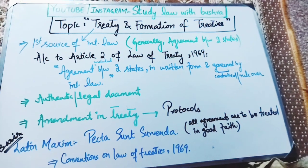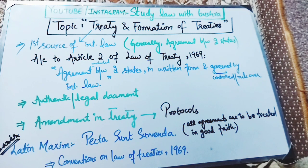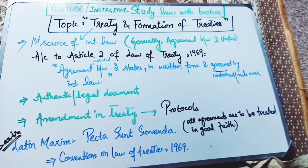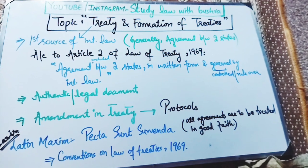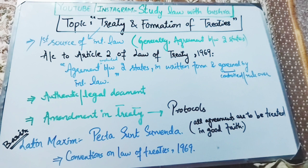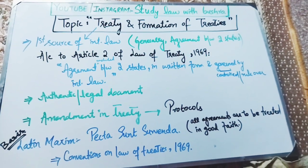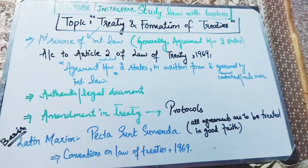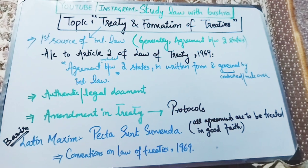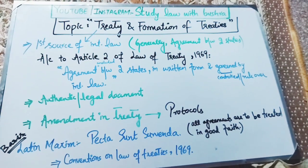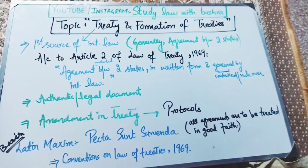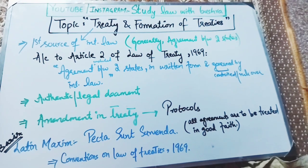This definition gives us the essential elements of a treaty. It is an agreement between two states, but under the Vienna Convention on the Law of Treaties 1969, it must be in written form, and it is governed by international law — that is why a treaty is considered an authentic and legal document. If we want to make any amendment in the treaty, we can do so, and that amendment is simply called a protocol.